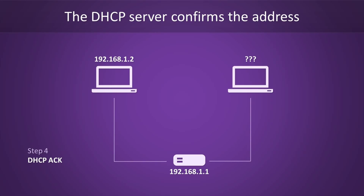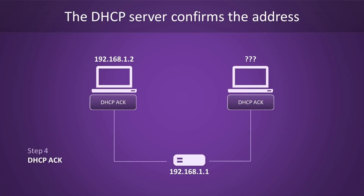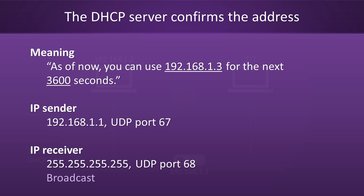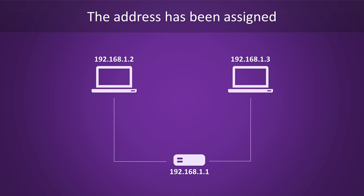We're down to the fourth and final step now. This one's called DHCP ACK, where ACK stands for acknowledgement. In this step, the DHCP server will confirm to the host that it can start using the address. Like in all other steps, this message will also be broadcast. A DHCP ACK message will confirm that the host can start using the address for the previously specified amount of time. The server will put its IP address into the sender field and use ports 67 and 68 as the sender and receiver. After the host receives confirmation, the process is complete — the host can start using its shiny new IP address.